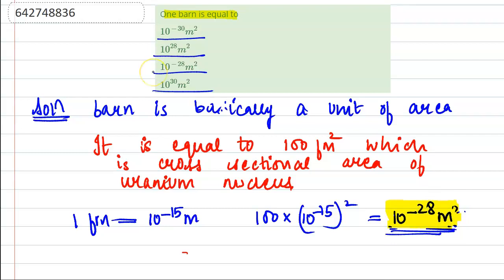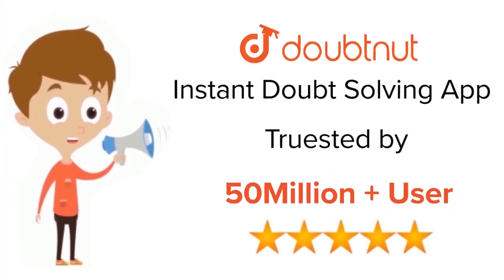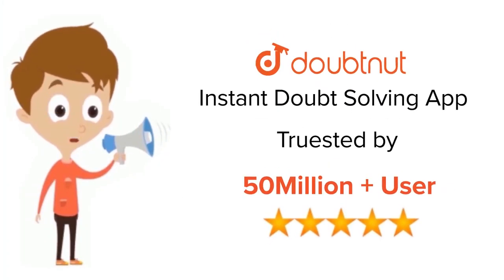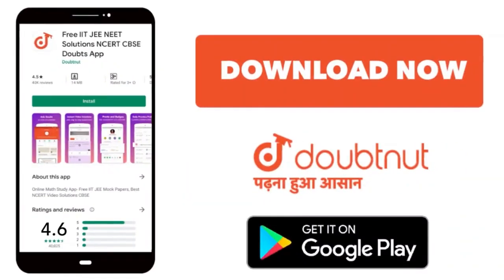So the answer for this question is option C: 10 to the power minus 28 meter square. Thank you. For class 6 to 12, IIT JEE and NEET level, trusted by more than 5 crore students — download the DoubtNet app today.